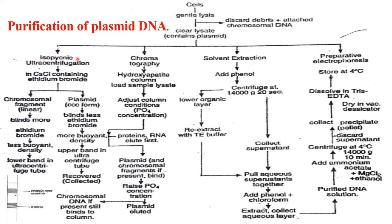Purification of plasmid DNA can be done by four methods: one is isopicnic ultracentrifugation, second is chromatography, third is solvent extraction, and fourth is preparative electrophoresis. For isopicnic ultracentrifugation, CsCl containing ethidium bromide is used. Chromosomal fragments bind more to ethidium bromide, resulting in lower buoyant density and forming a lower band in the centrifuge tube. Plasmid DNA binds less to ethidium bromide, giving higher buoyant density and forming an upper band in the ultracentrifuge tube — the upper band is collected.